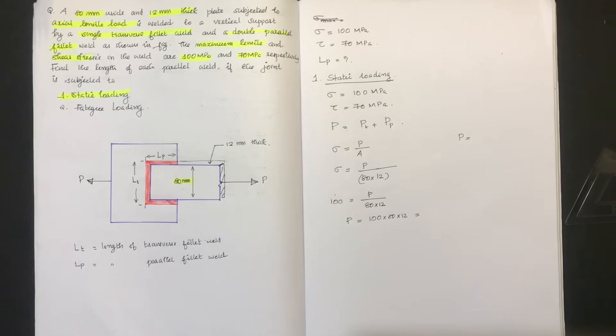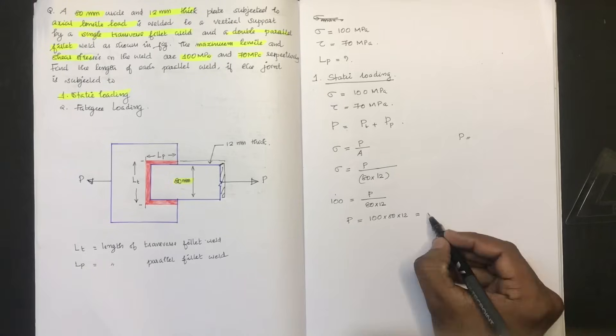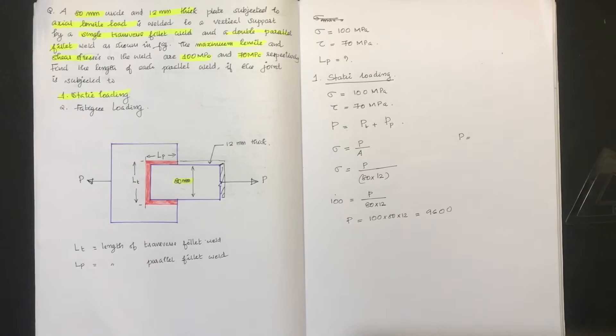Substituting the values, we get P equal to 96,000 N (96 kN).